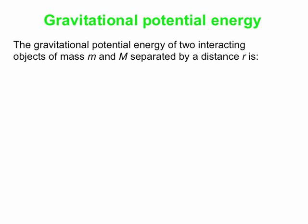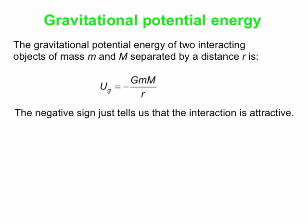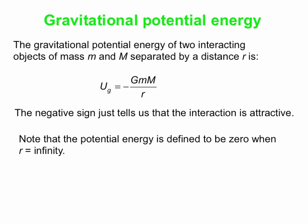How about potential energy? We're used to using MGH. Well, we're going to throw that out the door too. We're replacing MG by GMM over R squared. That's a much more universal equation. We do the same thing with MGH. We're not going to use MGH anymore. We're going to use something else. The gravitational potential energy is minus big G MM over R. The negative sign simply tells us that the interaction is attractive. That's all it's representing.